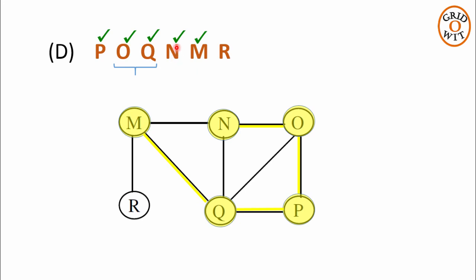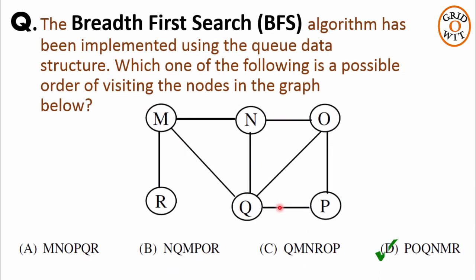Now there is no adjacent node of node M which is not traversed, so we will see the neighbors of node M, and the only node left to be traversed is node R, which is also the next node in the traversal sequence given in option D. So node R is also traversed. In this way, all the nodes are traversed without violating the properties of BFS breadth-first search traversal. So the traversal sequence given in option D is correct, and the answer to this question is option D.